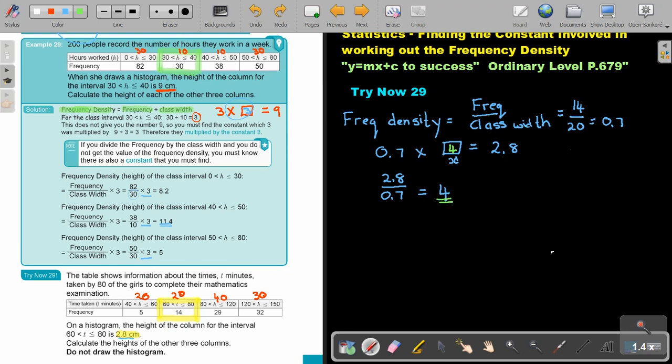So every time, I do it exactly like the previous examples, but I must remember to multiply with 4. So if I look at the next one, they say calculate the height of the other three columns. Let's start here. In that group, again, take my frequency. What is my frequency? 5. Divide it by my class width, 20. And remember to multiply it by 4. And if I do that, I'm going to get exactly 1.